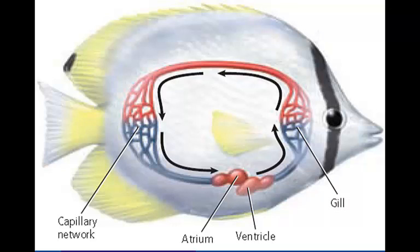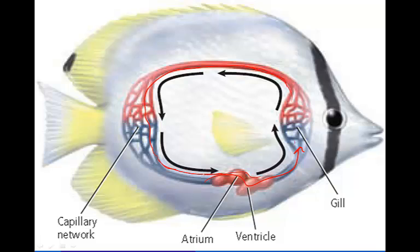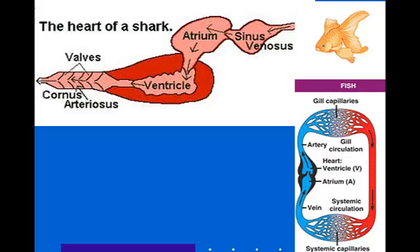The single-loop closed circulatory system features a two-chambered heart with an atrium and a ventricle. It pumps blood out to the gills where the blood becomes oxygenated, and then continues to pump through the body and back into the heart. Notice the one-way loop: heart to gills, throughout the body, then returning to the heart. The atrium receives deoxygenated blood from the body, and the ventricles are responsible for pumping blood from the heart to the gills.